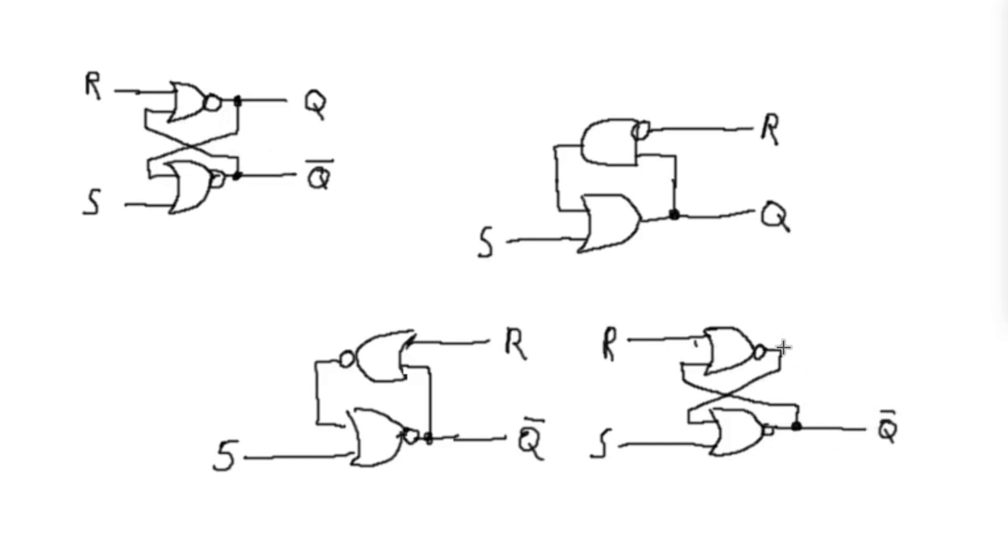The only difference of course is Q is not connected here. And so if we want to connect Q, obviously Q is just going to be the inverse of Q bar. So we can just use an inverter like that, and that will create our Q output. But we don't necessarily have to do that because, you know, we already have an inverter right here. If you take a look at this, this output is always going to be the inverse of this input. So we can actually just skip that entirely and just use the inverter that we have available from our NOR gate. And so now you can actually see, we actually have the exact same circuit.